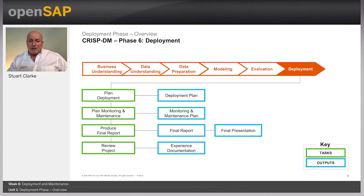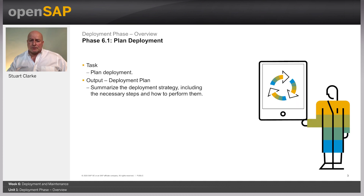The project leader and the team need to write up a final report. This may be only a summary of the project and your experiences, or it may be a final and comprehensive presentation of the project results. A project review should also be undertaken to assess what went right and what went wrong, what was done well and what needs to be improved. The plan deployment task takes the evaluation results and identifies a strategy to deploy the data science project results into the business.